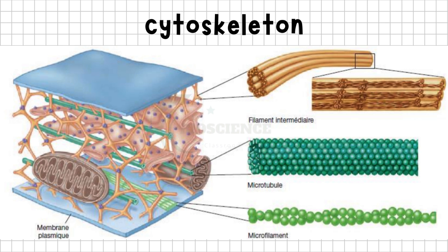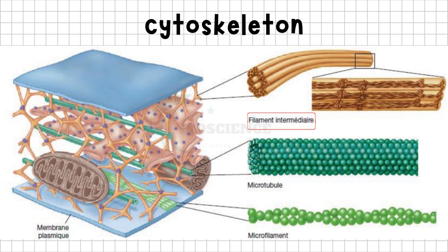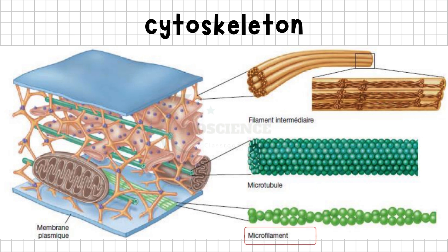They are connected to the plasma membrane and other organelles, such as the mitochondria, highlighting their integral role within the cell. The three main components of the cytoskeleton are intermediate filaments, microtubules, and actin microfilaments. Let's explore the location and structure of each type of filament.